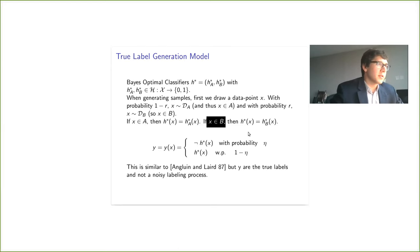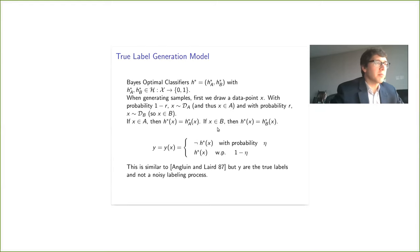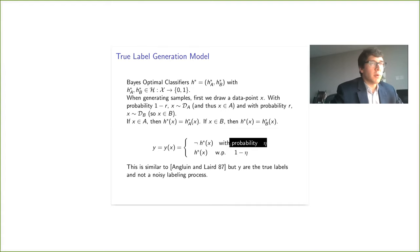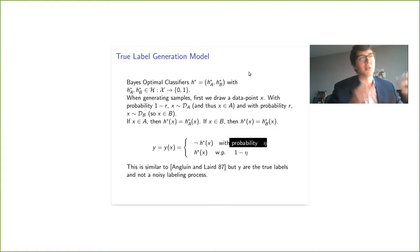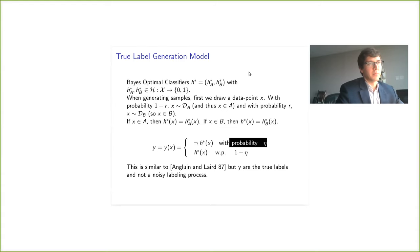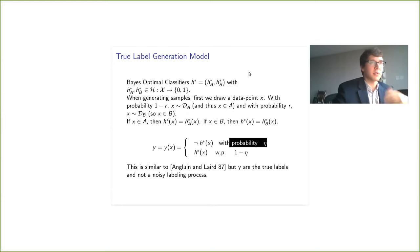Once we have decided what group we're in, we evaluate H_A* or H_B*. Then with some probability ETA — a parameter of the label process — with probability one minus ETA the prediction of H* is actually the true label, and with probability ETA it's flipped. This is very similar to the random classification noise model from Angluin and Laird, but there's an interpretive difference: these Y's are the true labels and they're not the consequence of a noisy labeling process — there are just limits to our predictability. The random classification noise model is intermediate between realizable and agnostic in terms of learning difficulty.